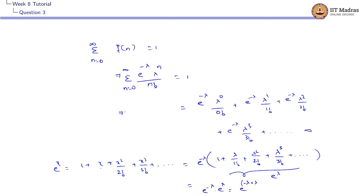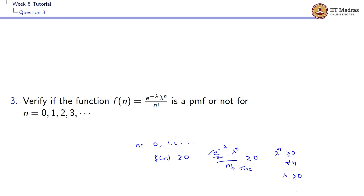Therefore, the full expression equals e^(-λ) · e^λ = e^(-λ + λ) = e^0 = 1. So the function f(n) = e^(-λ) · λ^n / n! satisfies both conditions and is indeed a valid PMF.